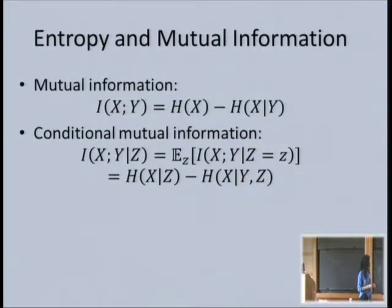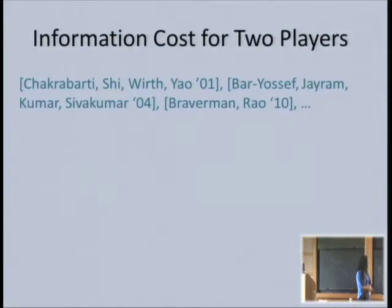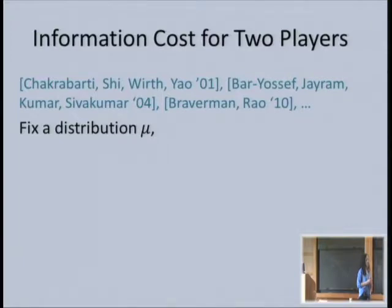I didn't put a few basic properties here like the chain rule for mutual information. If you want to see technical details, we can do that later. This notion has been used to get many interesting lower bounds on communication complexity through proving lower bounds on information complexity.